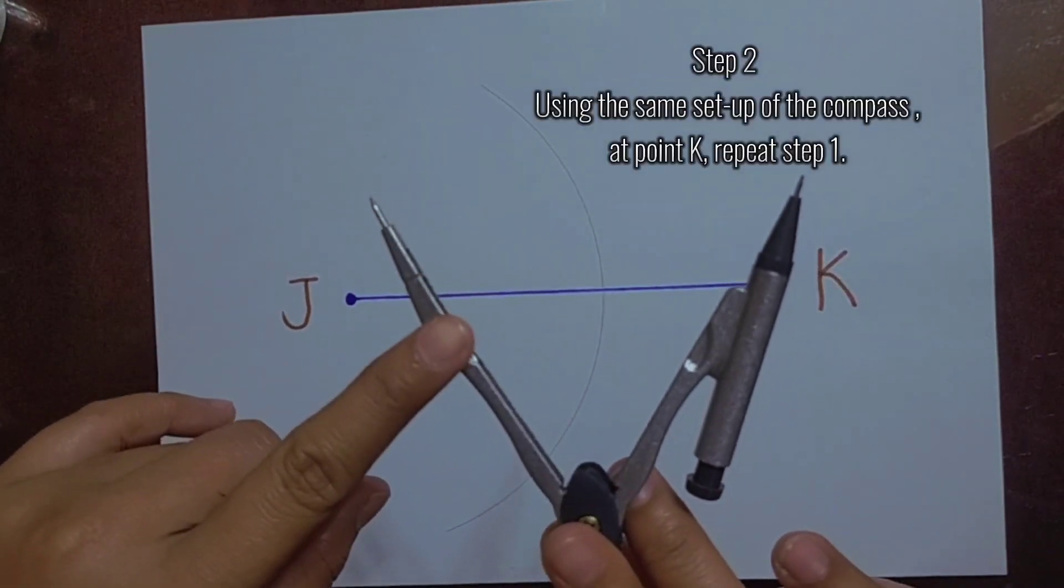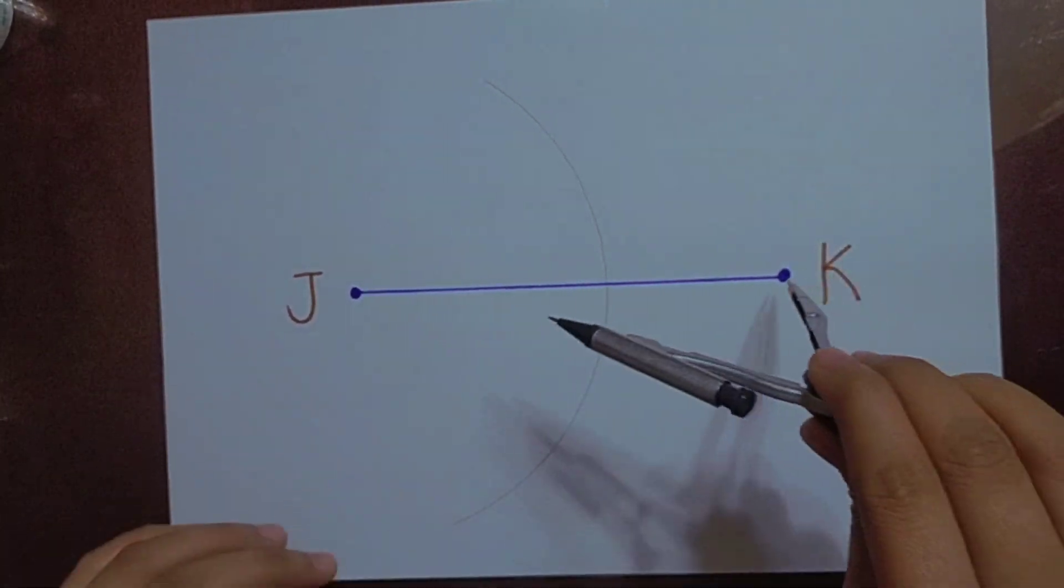Step 2. Using the same setup of the compass, at point K, repeat step 1.